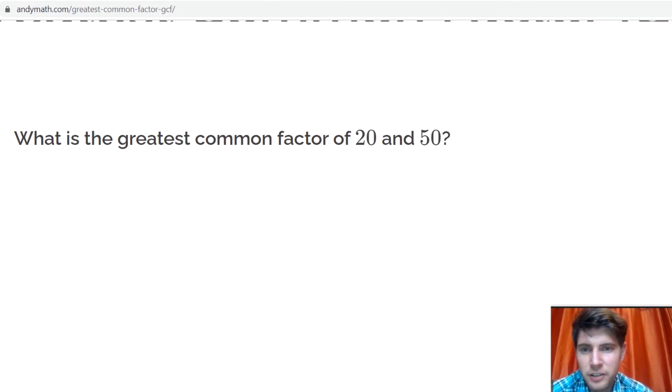For 20, the factors are 1 and 20, 2 and 10, because 2 times 10 is 20. 3 doesn't go into 20, and we have 4 and 5, and that's it. So 1, 2, 4, 5, 10, and 20 are all the factors of 20.